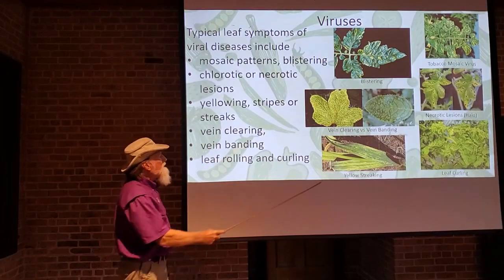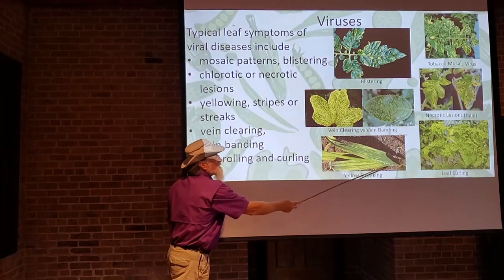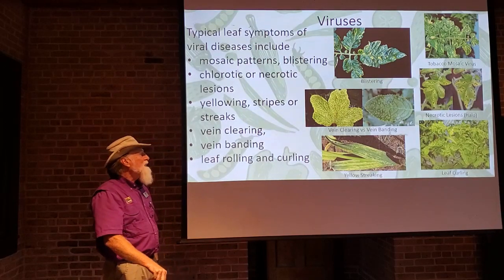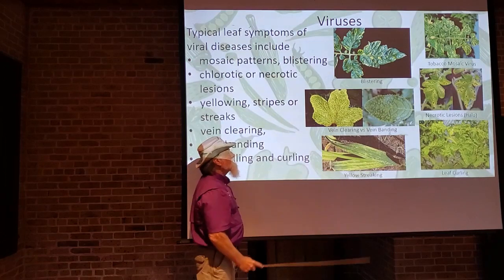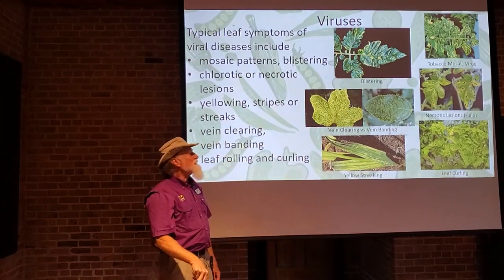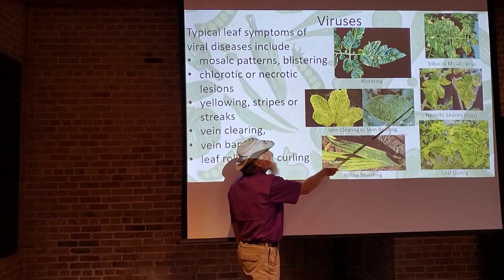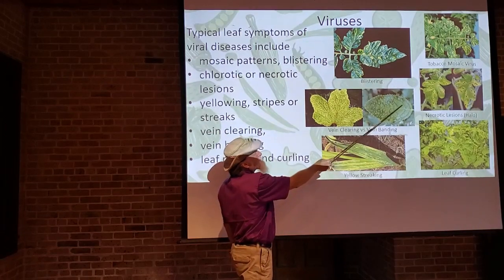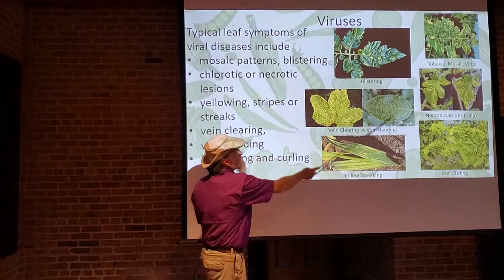You also have yellowing, such as yellow streaking on a corn plant — long streaks of chlorotic tissue are symptomatic of virus infection. Then there's vein clearing and vein banding: with vein clearing, the veins become translucent, almost clear; with vein banding, the veins have dark tissue following along them, where the normal green leaf tissue develops much darker green along the veins. Both are symptoms of virus infection.